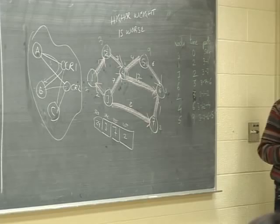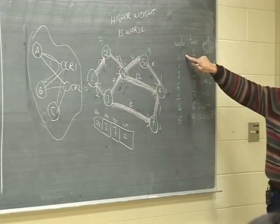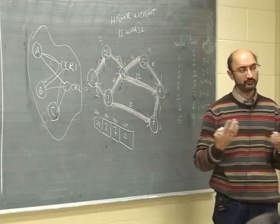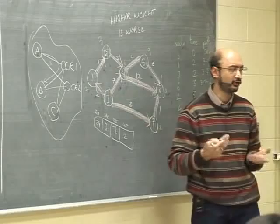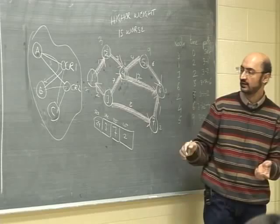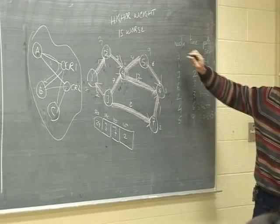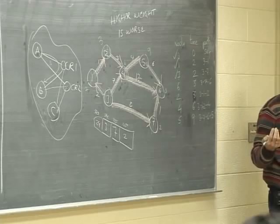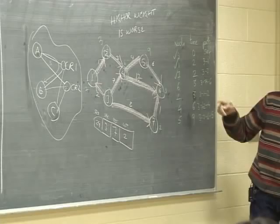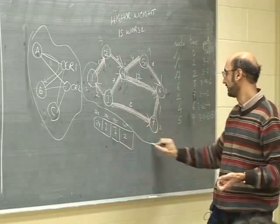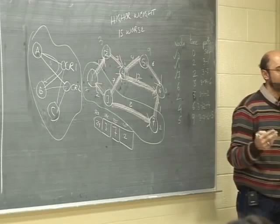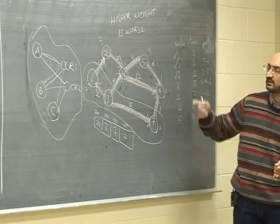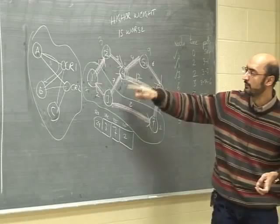The general algorithm: maintain a blob of nodes to which you know the shortest path. Find all nodes one hop away from the blob and compute the cost to reach them from the blob. Pick the minimum cost node and add it to the blob. Repeat. This is called Dijkstra's algorithm — or the omnivorous blob algorithm, or the bucket of paint algorithm. Each node runs this in parallel because through flooding they all have the full graph.